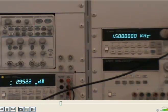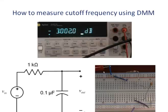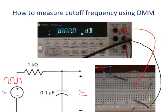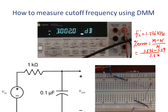Right now at 1.5 kHz, the gain of the circuit is negative 2.9 decibels. We adjust the frequency to make the gain exactly 3 decibels below the passband gain — negative 3 decibels. When the frequency is 1.536 kHz, the gain is 3 decibels below the passband gain. The measured value is 1.536 kHz and the nominal value is 1.59 kHz. The percentage error, calculated as measured minus nominal over nominal, is negative 3.4 percent.